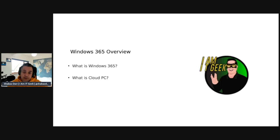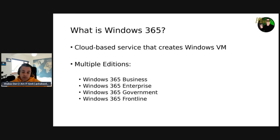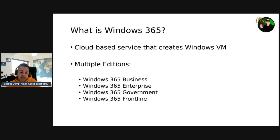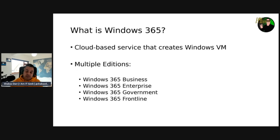What is Windows 365 and what is Cloud PC? So Windows 365 is a cloud-based service that automatically creates a new type of Windows virtual machine, known as a Cloud PC. This is for your end users — each Cloud PC is assigned to an individual, so it's that one-to-one ratio. It's their dedicated Windows device. Windows 365 is going to provide productivity, security, collaboration, and all those benefits of Microsoft 365. It's available in multiple different editions, which we'll go through throughout this part of the series.